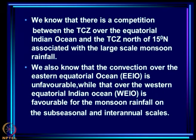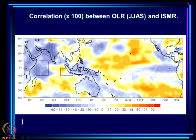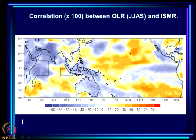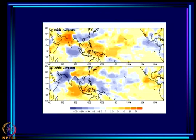From our discussion of inter-annual variation as well as intra-seasonal variation — that is, active and break phases — convection over the eastern equatorial Indian Ocean is unfavorable for the monsoon. That is the region over which, if a TCZ appears, it competes with the monsoonal TCZ, while convection over the western part is favorable. The correlation between OLR and all-India monsoon rainfall confirms an inverse correlation between rainfall over India and the eastern equatorial region.